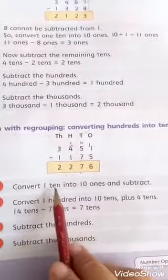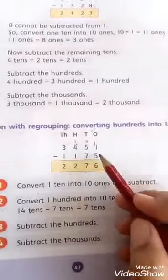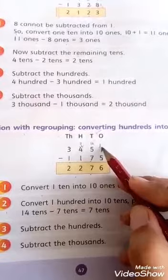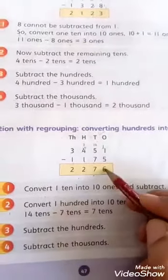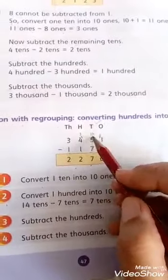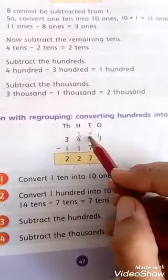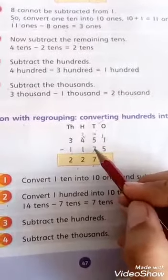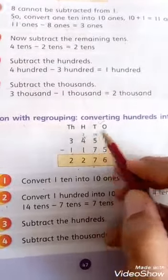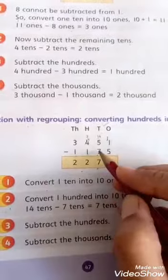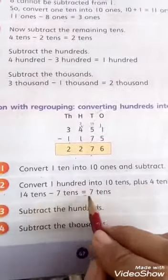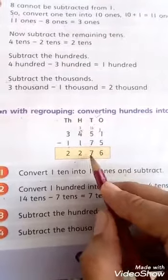In the first step, you have to convert 1 ten into 10 ones and subtract. As you know that in the ones column we can't subtract 5 from 1, so we have to take the carry from the tens column and we made 11. When we subtract 5 from 11 the answer will be 6. In step 2, you have to convert 100 into 10 tens plus 4 tens. When we take the 1 from the hundreds column, 4 is remaining. We can't subtract 7 from 4, so we take the carry from the hundreds column, making 14. 14 tens minus 7 tens equals 7 tens.